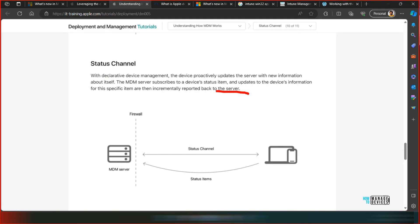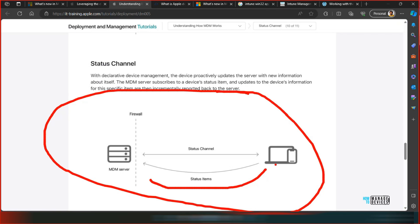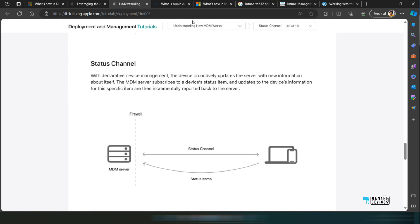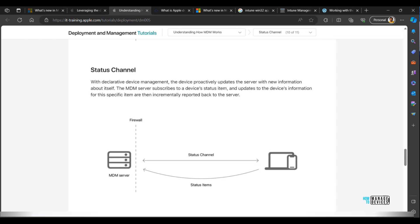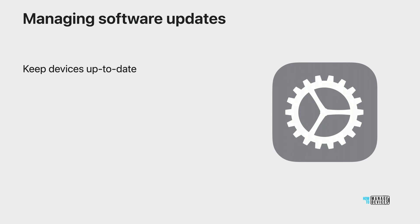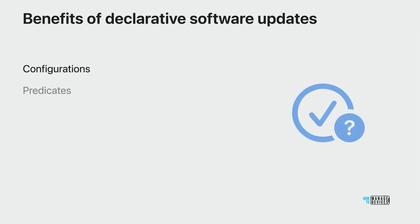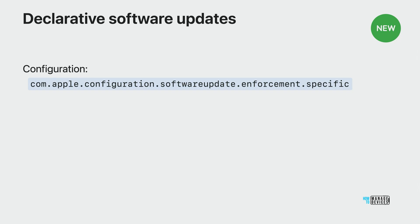The status channel is also important. If there is any status update, the device will automatically send the status to the MDM server — that is a more useful method. Apple says it is an asynchronous, more effective way of managing devices. That was all about DDM versus MDM. You can get all these details in the video description. Apple explains how to manage and enforce software updates on Apple devices, and the benefits of declarative software updates are also explained by Apple.